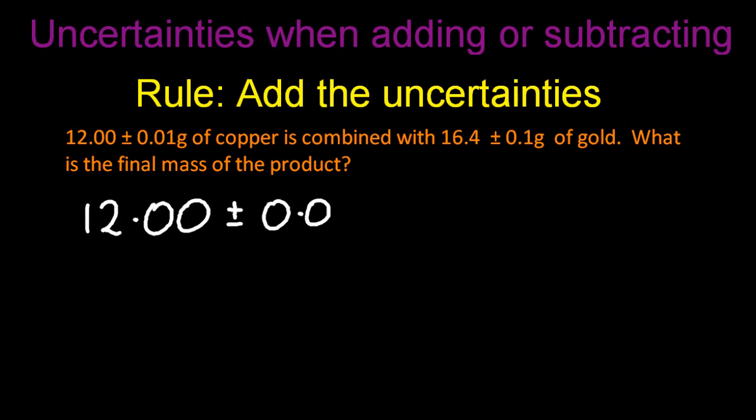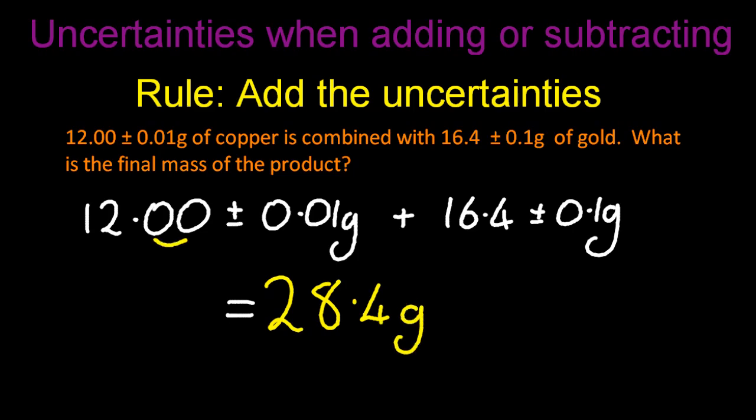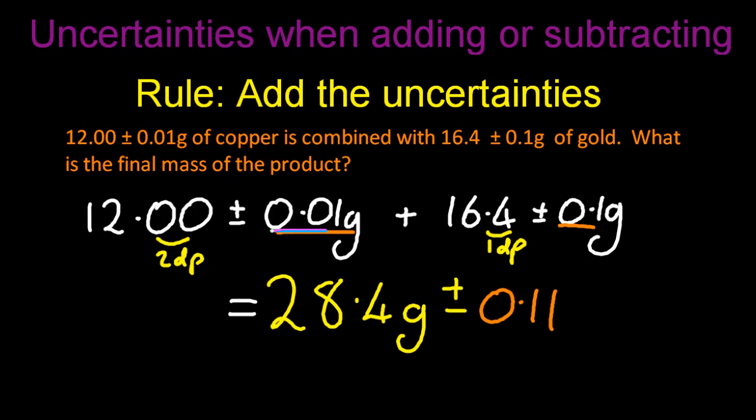So 12g of copper plus 16.4g of gold. Now notice the uncertainties are different there. So let's just work out the answer. That's 28.4. Notice it's 0.4 in the answer because in the question, the least decimal place is one decimal place. I'm trying to stick with the rules from previous videos. All right, that final one that I got from adding the uncertainties can't be there for two reasons. The first reason is that 0.01 is a lot smaller than 0.1, and you can ignore the smallest uncertainty if it's a lot smaller than the other one. And the second reason is that uncertainty should only have one significant figure.